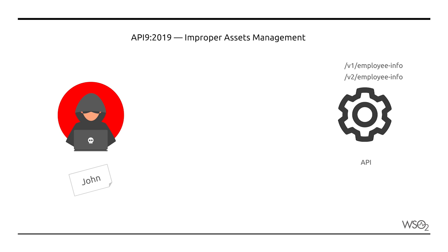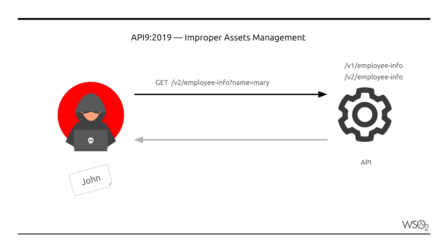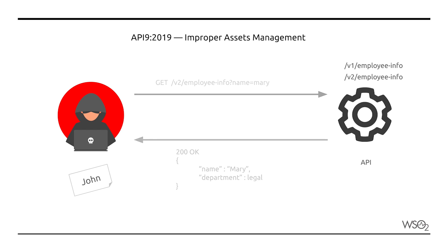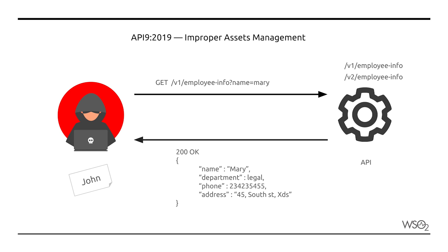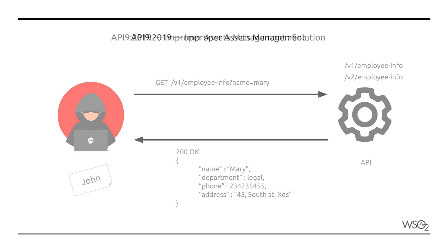John, who is using the latest version of the application, notices that version 2 (v2EmployeeInfo) of the API is being used to retrieve information. By changing the version to 1 in the URL and invoking the API resource, John discovers the initial version of the API and is able to retrieve additional personal information about the subject of the search that should not be exposed.